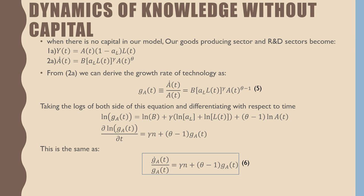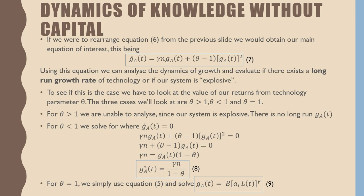From equation 2a we can derive the growth rate of technology as follows. If we take the logs of both sides of this equation and differentiate it with respect to time, we get our equation of interest over here: this is γn plus (θ minus 1) times our growth rate in technology.